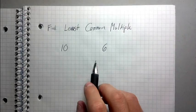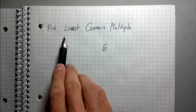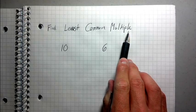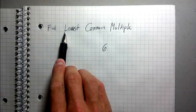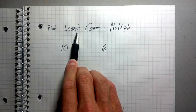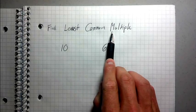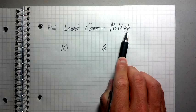So let's begin by thinking about what these words mean, least common multiple, within the context of math. Least means smallest. Common means shared. And a multiple is what you get when you count by a number.